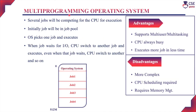Multiprogramming operating system. In this operating system, several jobs will be competing for the CPU for execution. Initially, the job will be placed in the job pool. The operating system will pick one job from the job pool and that will be assigned to the CPU for execution. When the executing job needs to wait for the IO devices, the CPU will switch to another job — the operating system will pick another job from the job pool and assign it to the CPU.